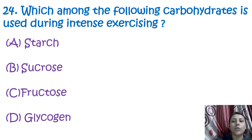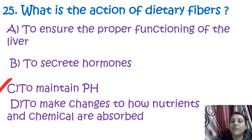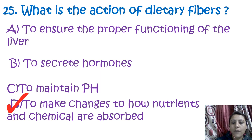The next question is: which carbohydrate is used during intense exercise? The answer is glycogen. The last question is: what is the action of dietary fibers? The answer is that dietary fibers lower the rate at which nutrients and chemicals are absorbed. Dietary fibers lower fat absorption in our body, which makes them very good for human health.